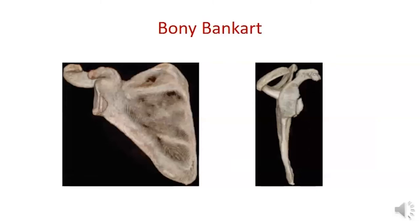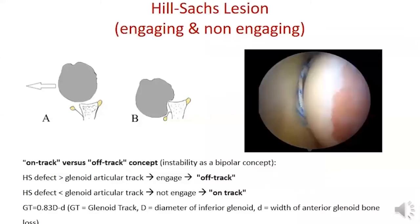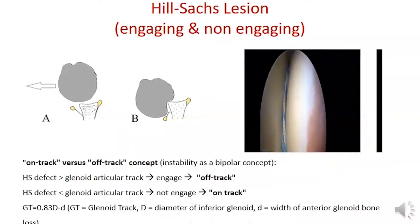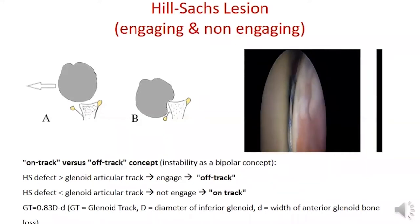Bony Bankart is a fracture of the antero-inferior glenoid caused by the humeral head during anterior shoulder dislocation, allowing the humeral head to subluxate anteriorly more easily. The Hill-Sachs lesion is a compression fracture of the posterior superior lateral humeral head resulting from impaction against the denser antero-inferior glenoid during anterior dislocation, and is considered engaging when it engages the anterior glenoid rim in abduction and external rotation.